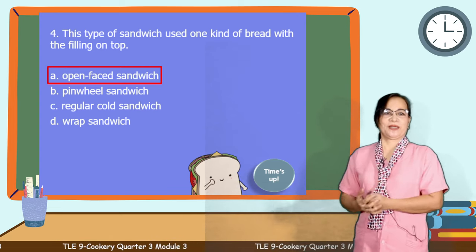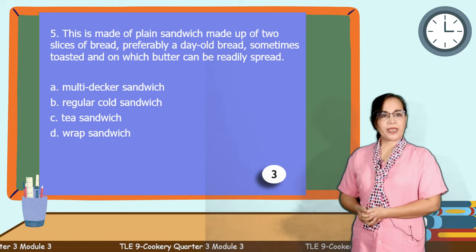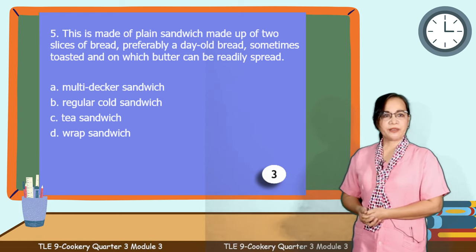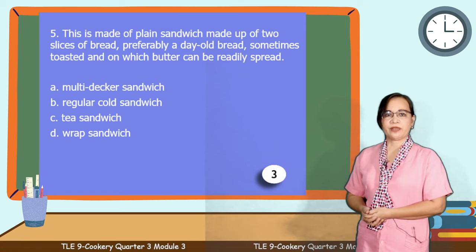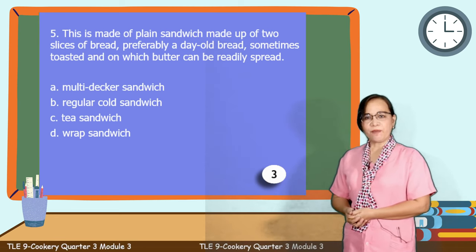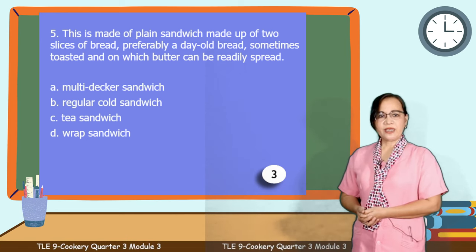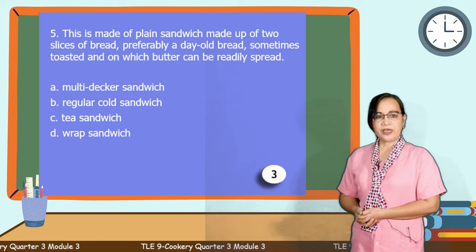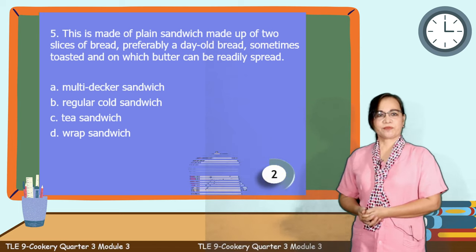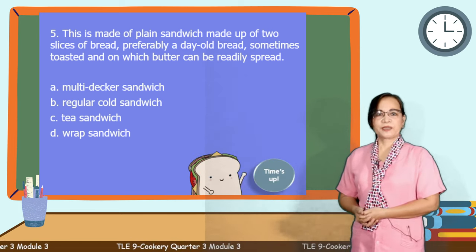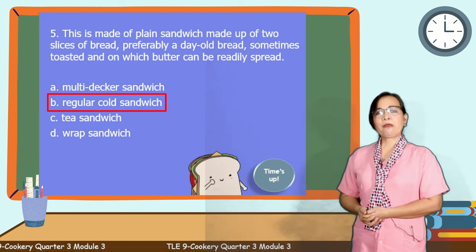Excellent, learners. Question number 5: This is a plain sandwich made up of two slices of bread, preferably day-old bread, sometimes toasted, and on which butter can be readily spread. Is it letter A, multi-decker sandwich? Letter B, regular cold sandwich? Letter C, tea sandwich? Or letter D, wrap sandwich? Time's up. The correct answer is letter B, regular cold sandwich. Congratulations.